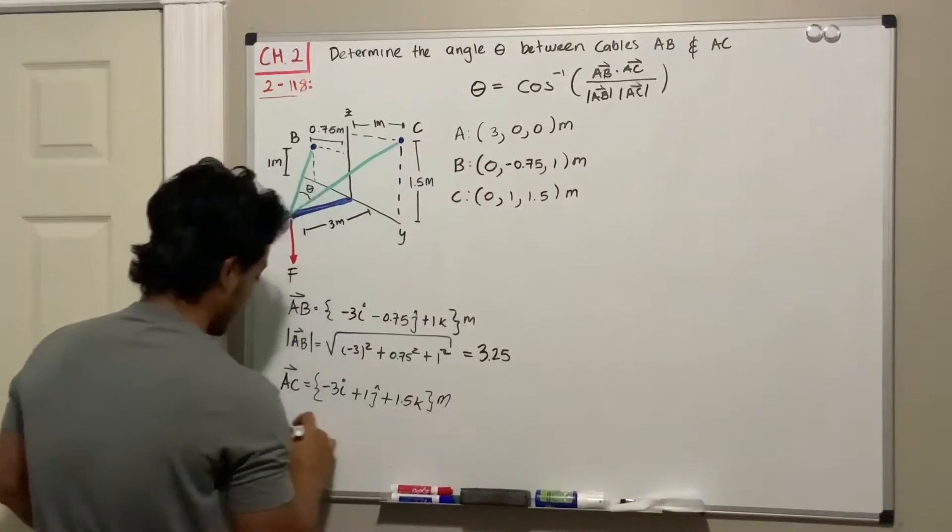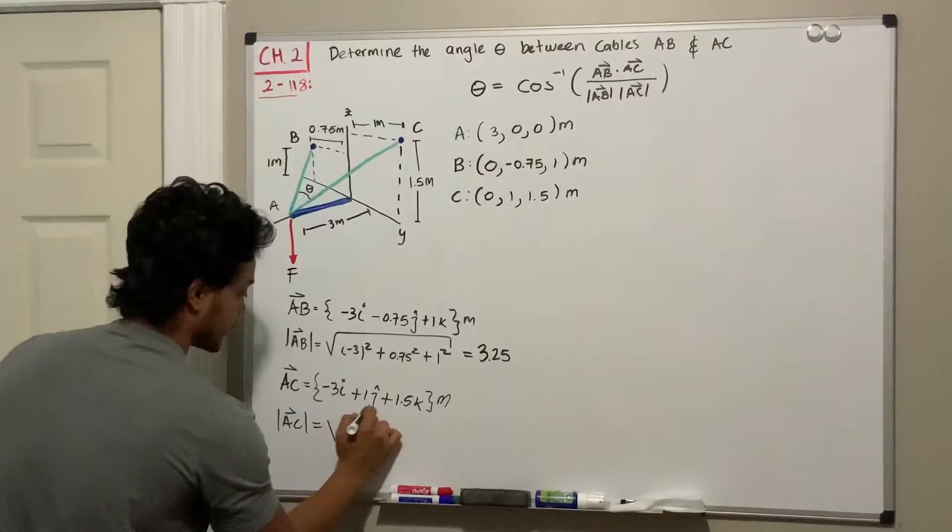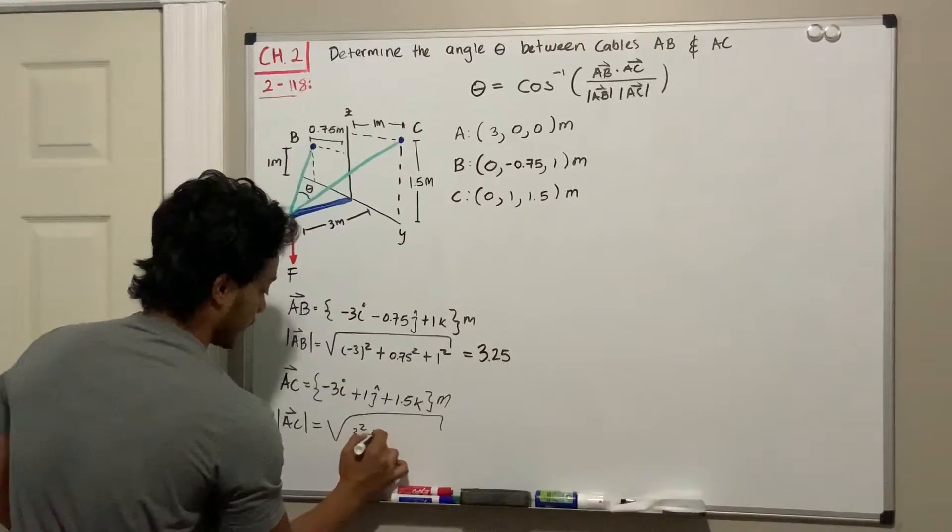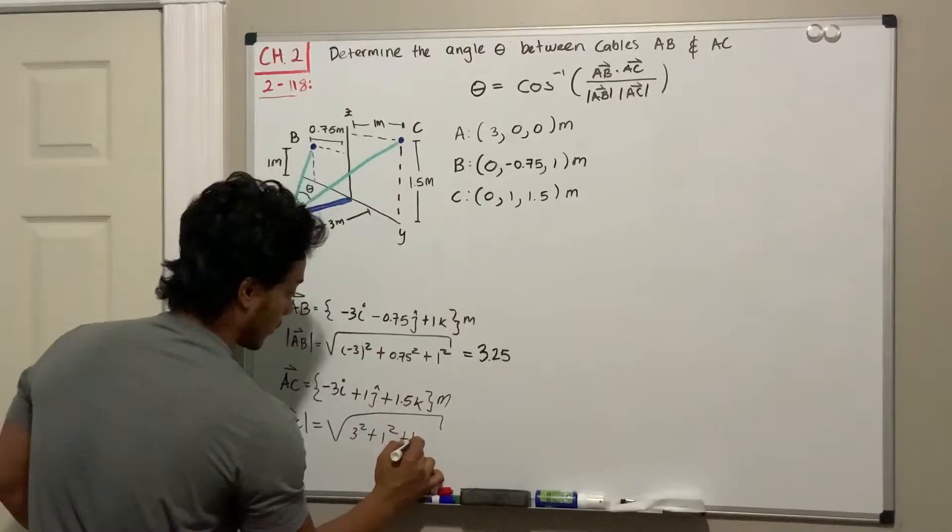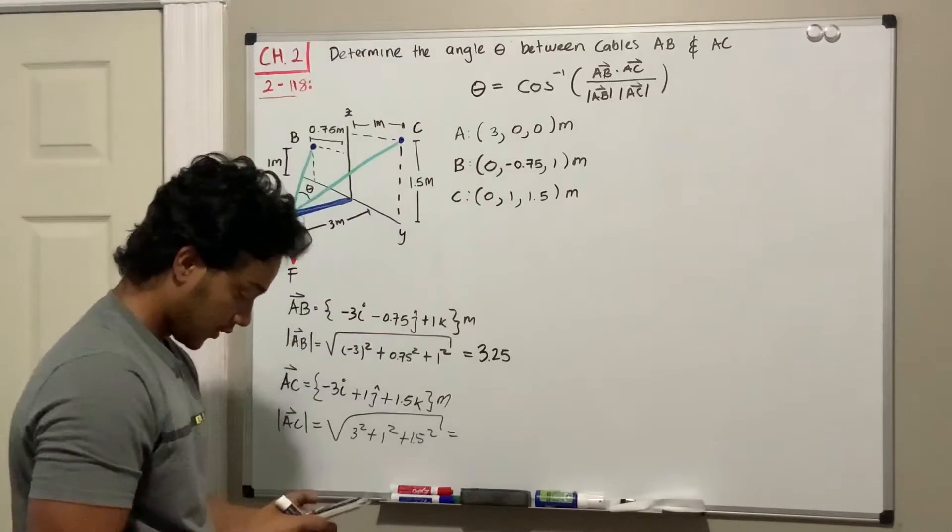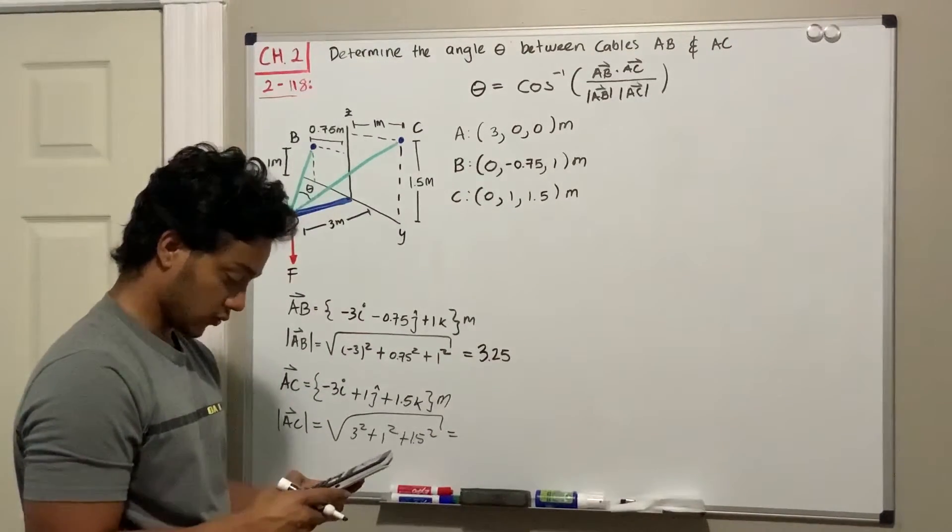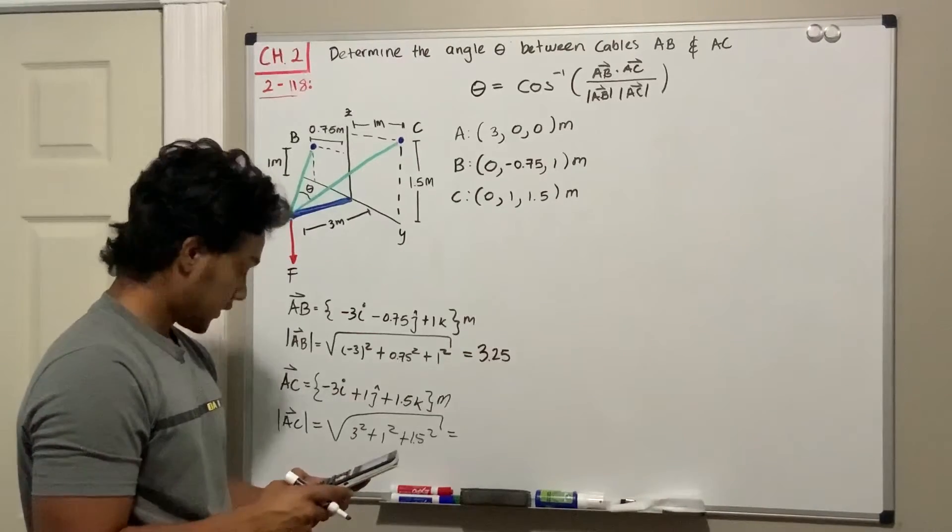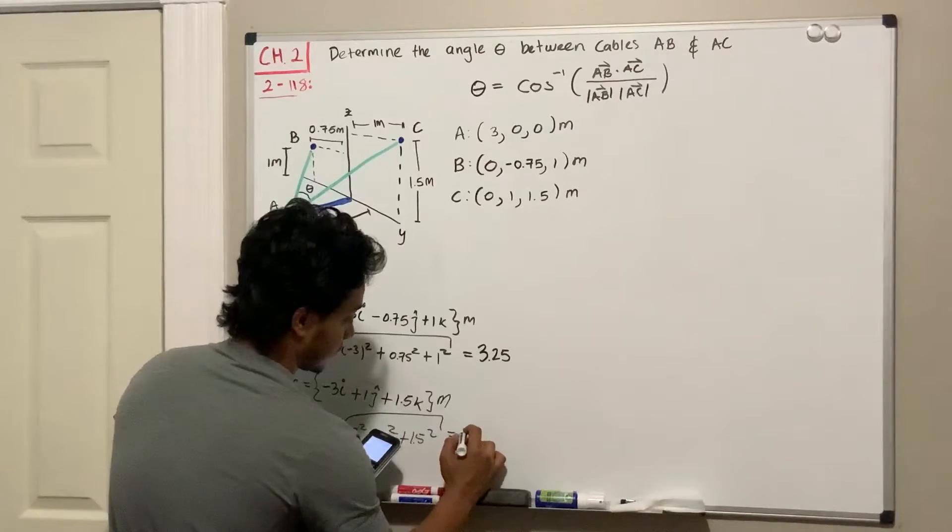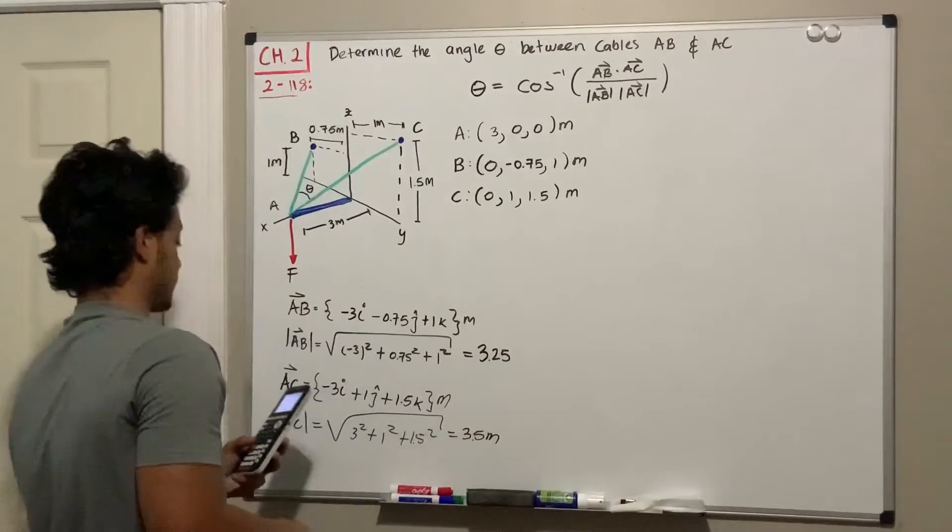These are in meters. We can find its magnitude as well. This is the square root of 3 squared plus 1 squared plus 1.5 squared. Using the calculator, we get the square root of 3 squared plus 1 squared plus 1.5 squared, which equals 3.5 meters.